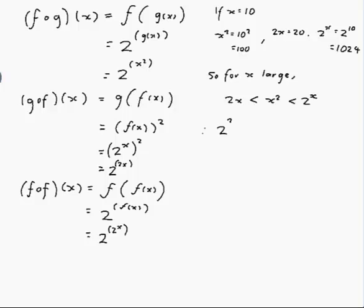So for x large, 2x is less than x squared, which is less than 2 to the x. Therefore, 2 to the power of 2x would be less than 2 to the power of x squared, which would be less than 2 to the power of 2 to the x. In fact, 2 to the 20 is much, much less than 2 to the 100, which is much, much less than 2 to the 1024. So we could put a much-less-than sign: 2 to the power of 2x is much less than 2 to the power of x squared, which is much less than 2 to the power of 2 to the x.